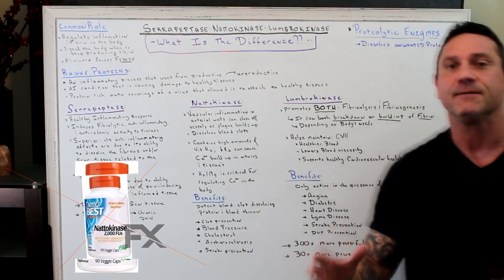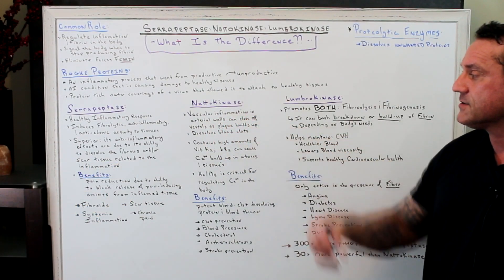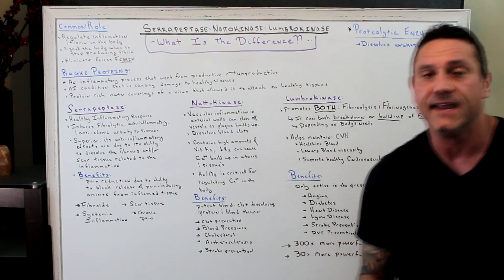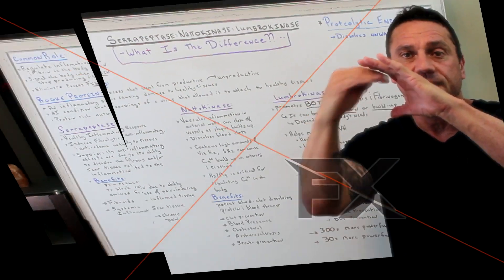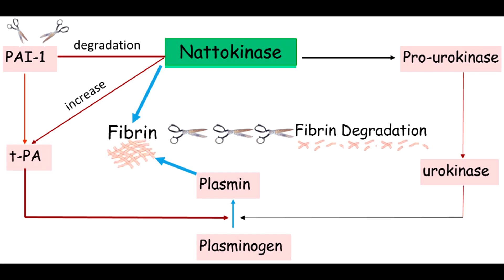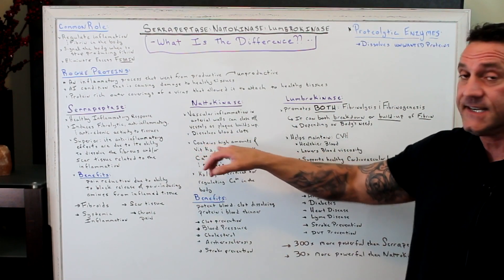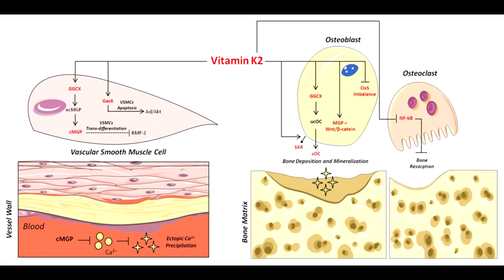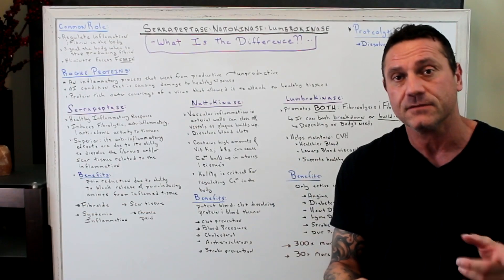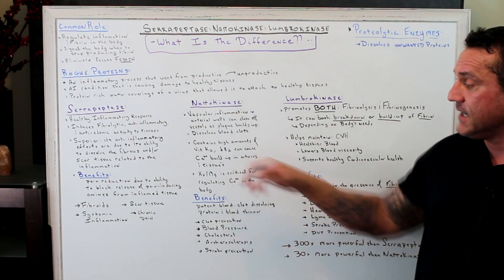Nattokinase is phenomenal for vascular inflammation and is loaded with vitamin K2. Vascular inflammation in the arterial walls can close vessels as plaque builds up. The inner wall of the arteries — called the endothelial lining — when inflamed, causes scar tissue to build up, narrowing the arterial system and making the blood thicker. Nattokinase dissolves blood clots and contains high amounts of vitamin K2, which pulls calcium away from where it shouldn't be and into the bones where it belongs.